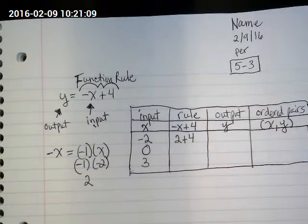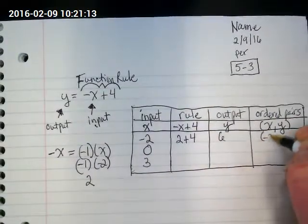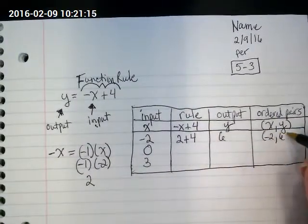And what's 2 plus 4? So our x, y pair is negative 2 comma 6.